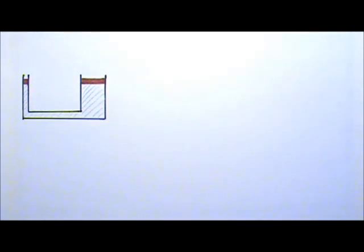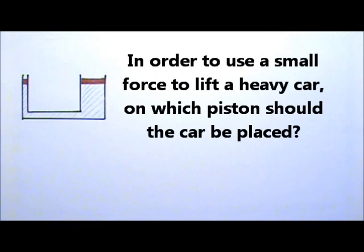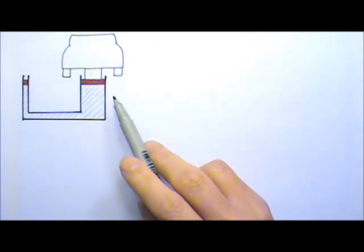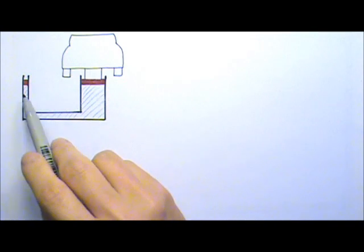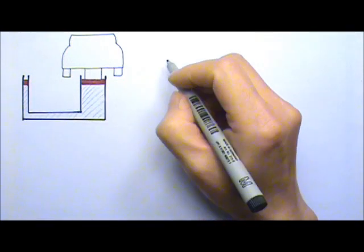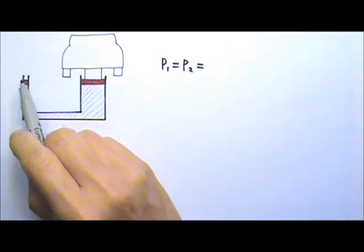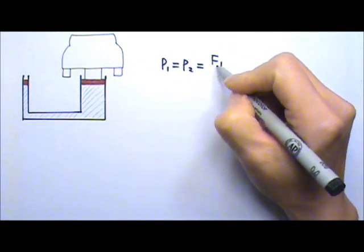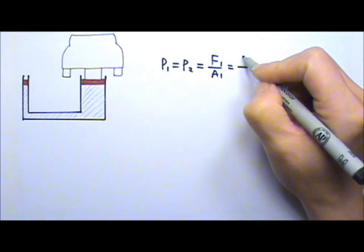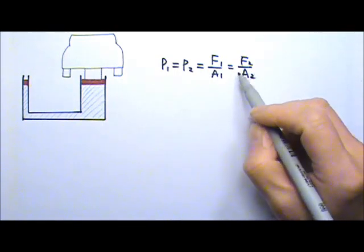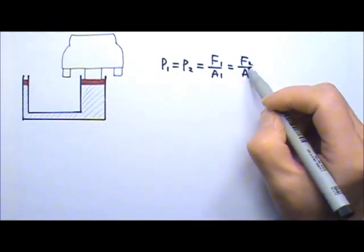In order to use a small force to lift a heavy car, the heavy car should be placed on the big piston, because the pressure should be the same on both sides. Pressure on one side equals the pressure on the other side, and we know that pressure equals force divided by area. So force on one side divided by its area equals force on the other side divided by the other piston's area. That means the side with the larger piston gets to have a larger force.